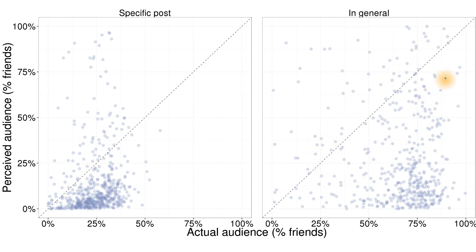Their guesses are a little bit higher, but still people typically think that maybe 10% of their friends see their content, when in reality it's more like 40%, 50%, even 60% of their friends will see their content in a given month. So this plot is showing the percentage of friends who actually saw their content in the last month. Again, they're underestimating.